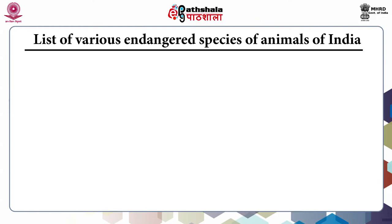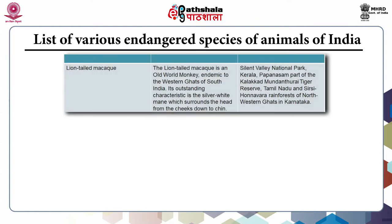The lion-tailed macaque is an Old World monkey endemic to the Western Ghats of South India. Its outstanding characteristic is the silver-white mane which surrounds the head, forming the cheeks down to the chin. This animal is found in Silent Valley National Park in Kerala and Papanasam, part of the Kalakad Tiger Reserve.